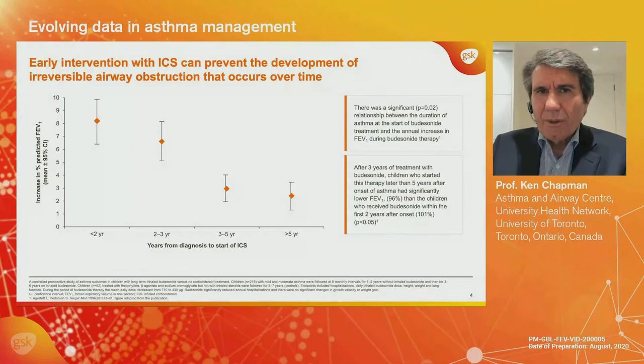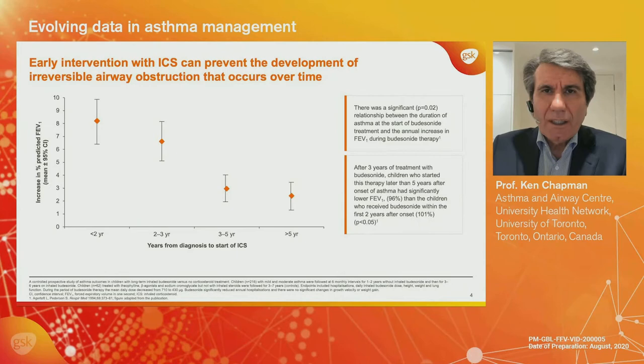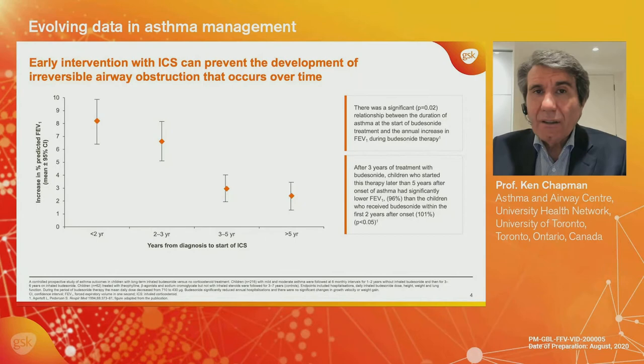Another principle developed early on was the notion that we had best introduced inhaled corticosteroid therapy early. Looking at these results in a variety of patients with asthma, on the y-axis we see the resulting improvement in FEV1 after inhaled corticosteroids are introduced. There are four different clusters of patients, and it's quite clear that the best results are in the first two groups — those who began inhaled corticosteroids early. Those who began it later had suffered irreversible changes, remodeling, if you will. So another principle: begin the anti-inflammatory therapy early, if at all possible.